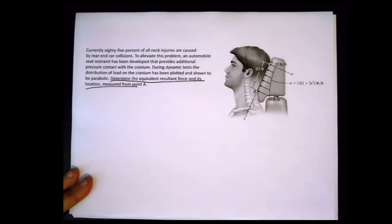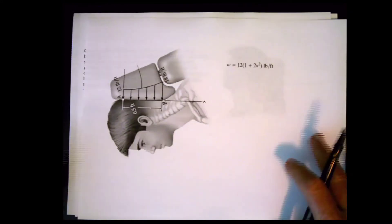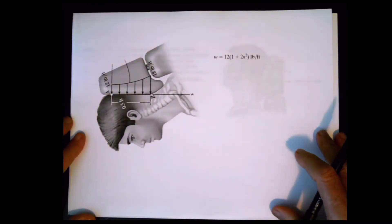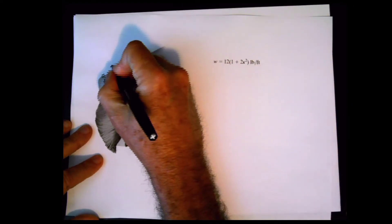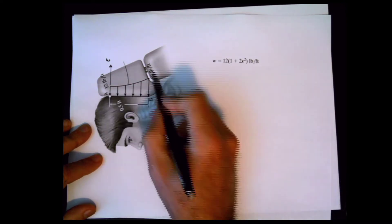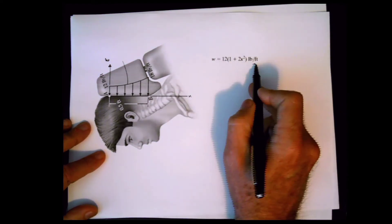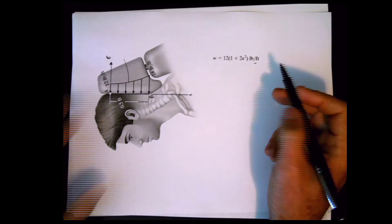You have this distribution over there, but if you rotate it and put it like this, it's exactly the same problem we have been doing. This is the distribution of the load. The problem is just asking — forget about the shape of the head — the only thing you are interested in is this curve with these values and the equation provided.